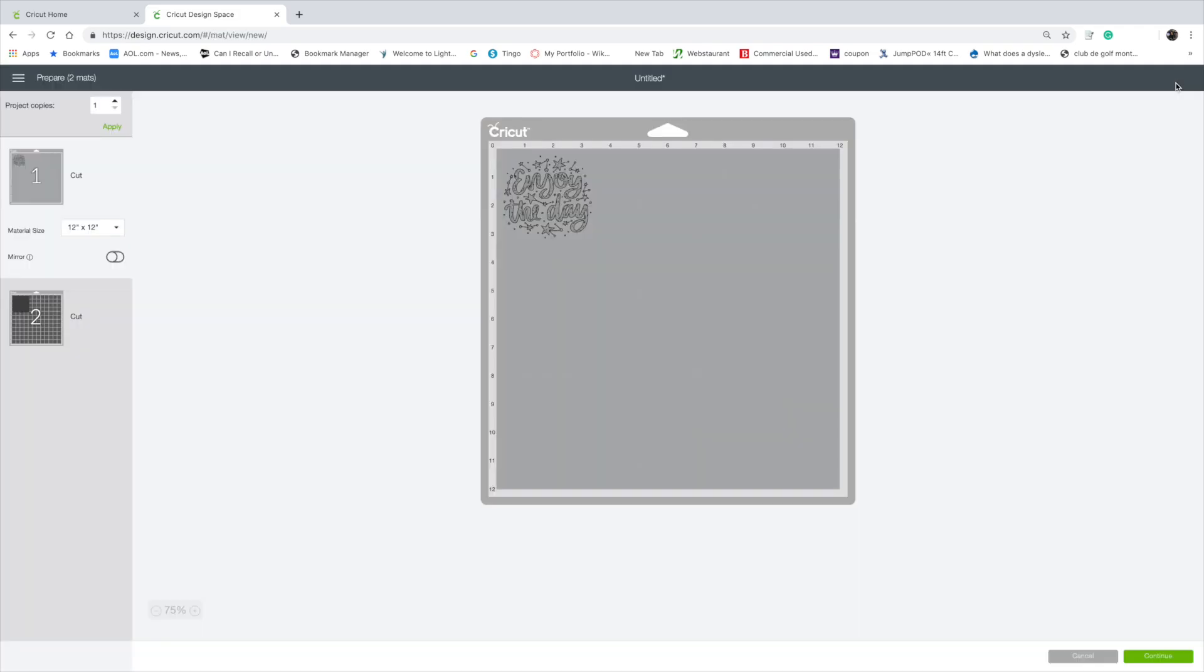Let the Cricut cut out the image. Don't forget that the square is not to be cut out since it was just to help us size the image.